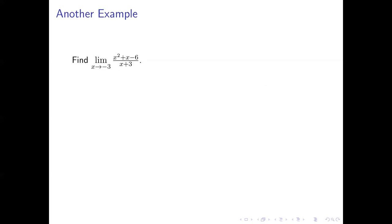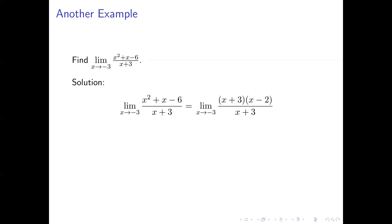Here's another simplification example. We'll find the limit as x approaches negative 3 of x squared plus x minus 6 over x plus 3. We simplify by factoring the numerator: it factors into x plus 3 times x minus 2. That gives us a common factor of x plus 3 that we can cancel, leaving just x minus 2. By the simplification principle, all those limits are equal, and the final limit of x minus 2 as x approaches negative 3 can be found by substitution. Plugging negative 3 in for x gives negative 5, so that's the value of the original limit.